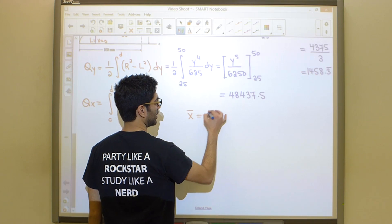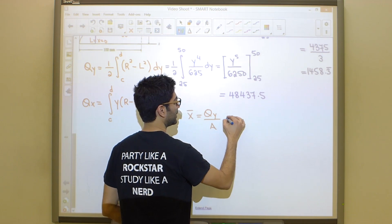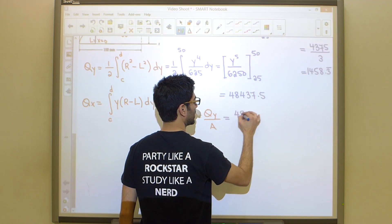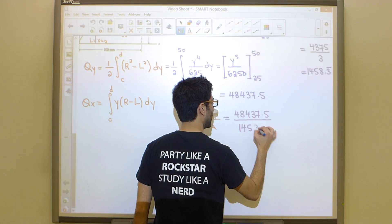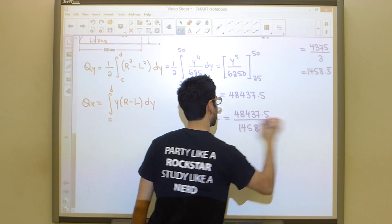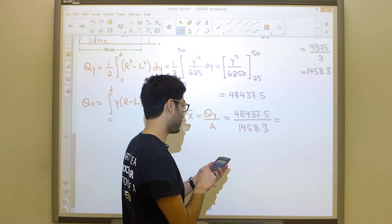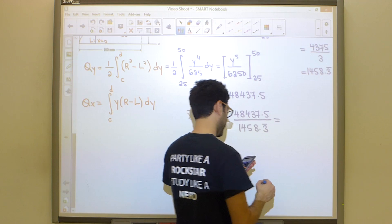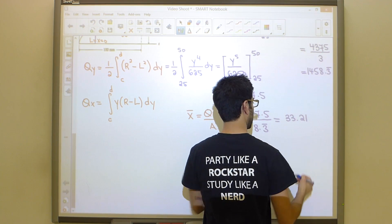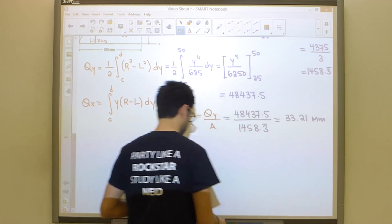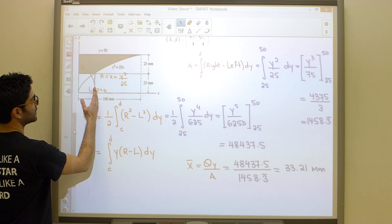So x bar here guys is nothing more than Qy over A. And if we apply this, we get 48437.5 divided by 1458.3 repeating. Let's calculate that and see if it makes sense. It gives me a final answer of 33.21 millimeters. So this would be the x coordinate of your centroid.